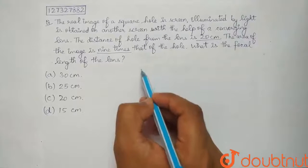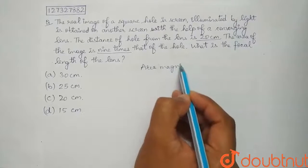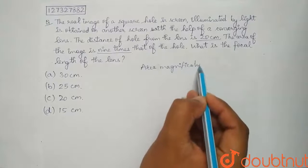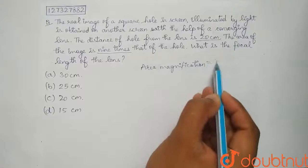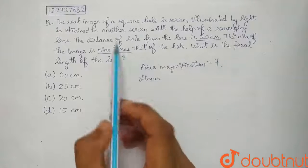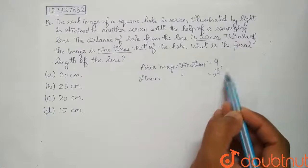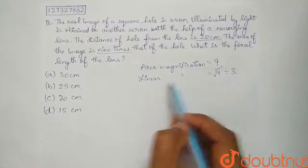So we know that if we look at area magnification, the area magnification is equal to 9. If we talk about linear, because it is a square hole, we can say that it is under root of 9 and that would be equal to 3. So this is linear magnification.